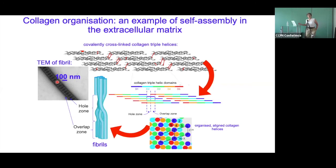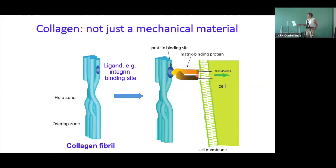That arrangement of molecules in the collagen fibril is important for the mechanical properties of collagen, because collagen is the main mechanical component in all of our tissues. The so-called hole zone, where there's less molecular density, is expected to be highly flexible. But the arrangement of molecules is important for more than just mechanical properties, because the arrangement determines what's on the outside of the fibril in terms of chemical functionalities, and that determines what the cell is going to see. Transmembrane proteins like integrins connect to collagen fibrils through very specific binding sites, and that's the outside-in signalling.